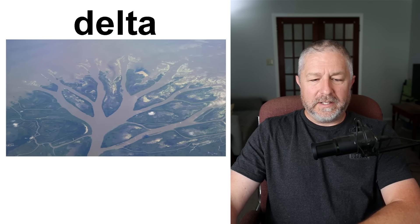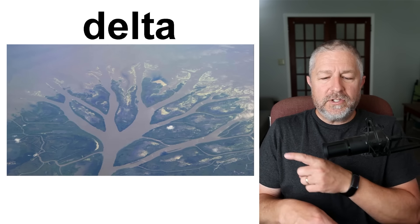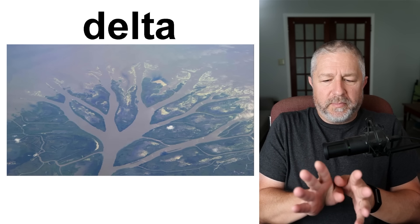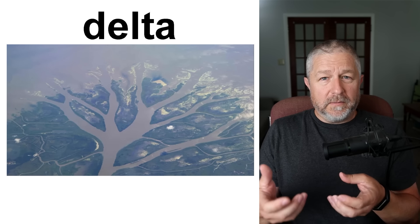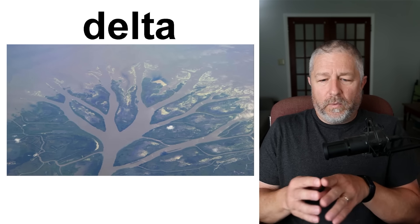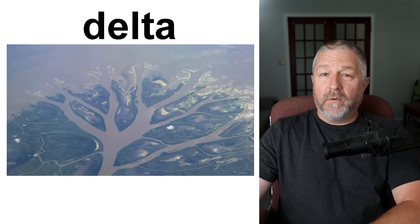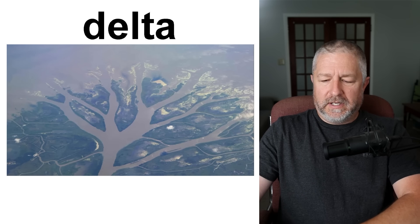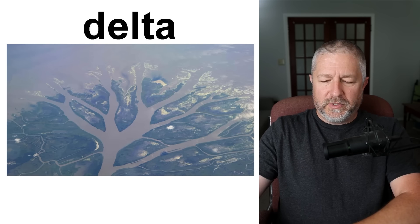A delta. A delta is an area where a large river flows into a lake or ocean. As a river gets close to a larger body of water, it will start to split, and we call this whole area a delta. If you follow the Mississippi River in the United States, you get to the Mississippi Delta where the Mississippi flows into the Gulf of Mexico. A delta is where a river flows into a larger body of water and breaks into smaller tributaries.